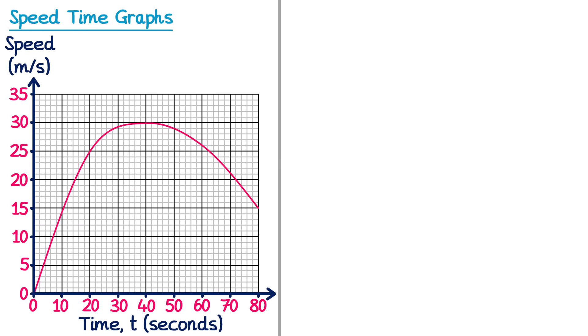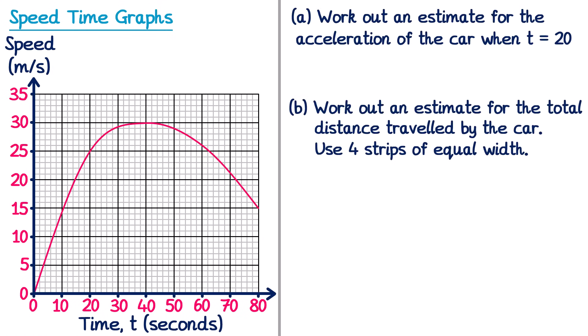Now let's look at a very different type of speed-time graph — one where the line is a curve rather than straight lines, which changes our approach. Part A: find the acceleration when t = 20. Although it may be tempting to draw a straight line, that would be incorrect. We need the acceleration at the instant t = 20, so we draw a tangent to the curve at that point, and then find the gradient of that tangent.